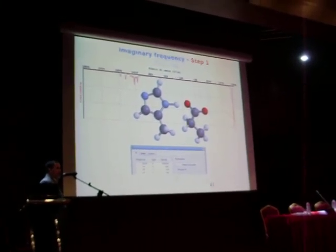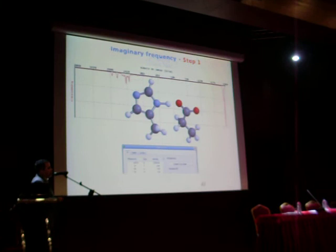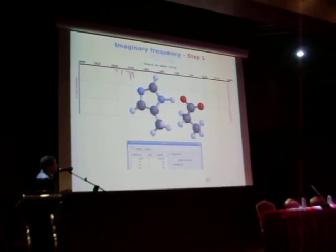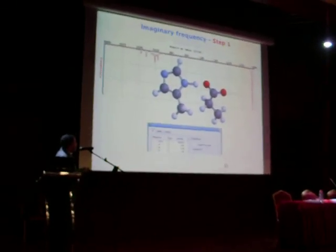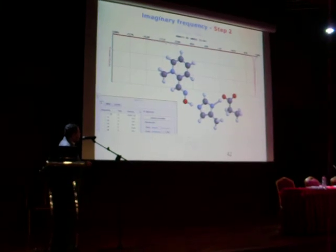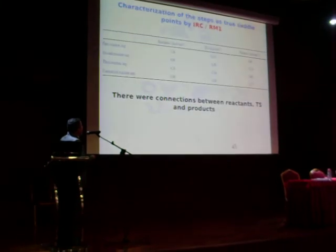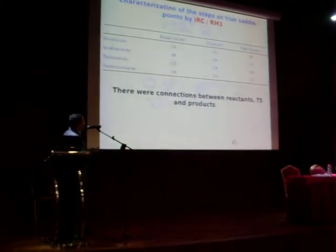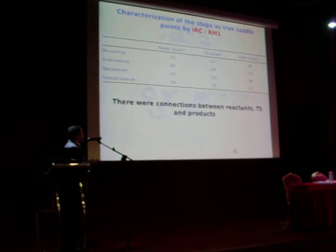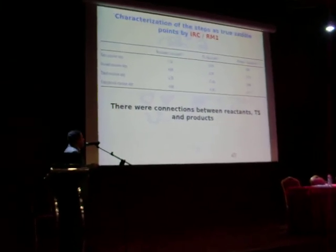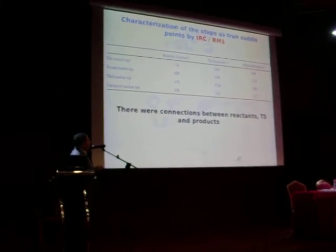To confirm our transition state as a true transition state, we decided to carry out a Hessian calculation. As we can see, in each step of the reaction we observe a unique imaginary frequency for steps 1, 2, 3, and 4. To characterize the steps as true saddle points, we carried out the intrinsic reaction coordinate using the semi-empirical method RM1.